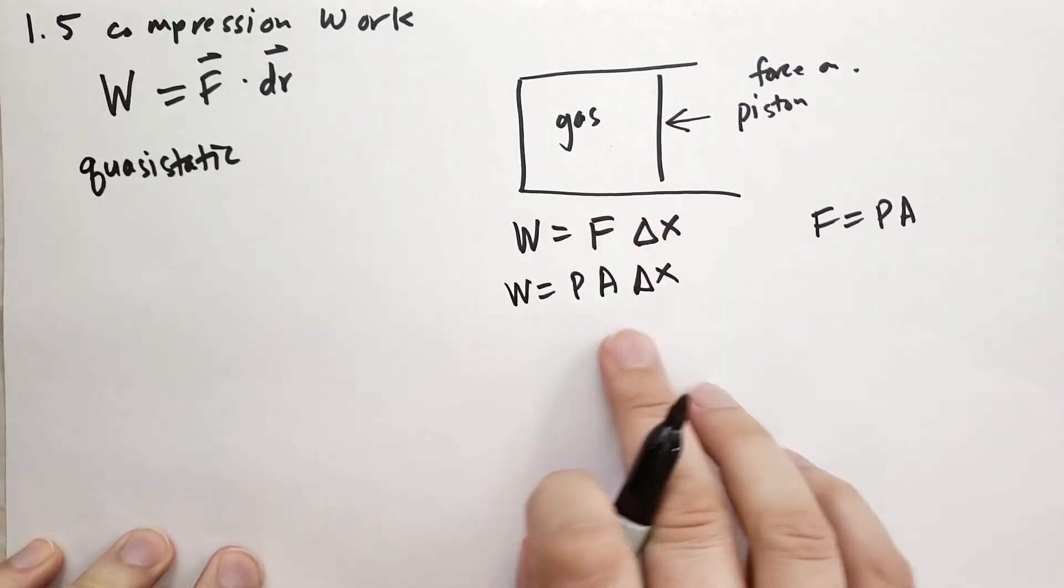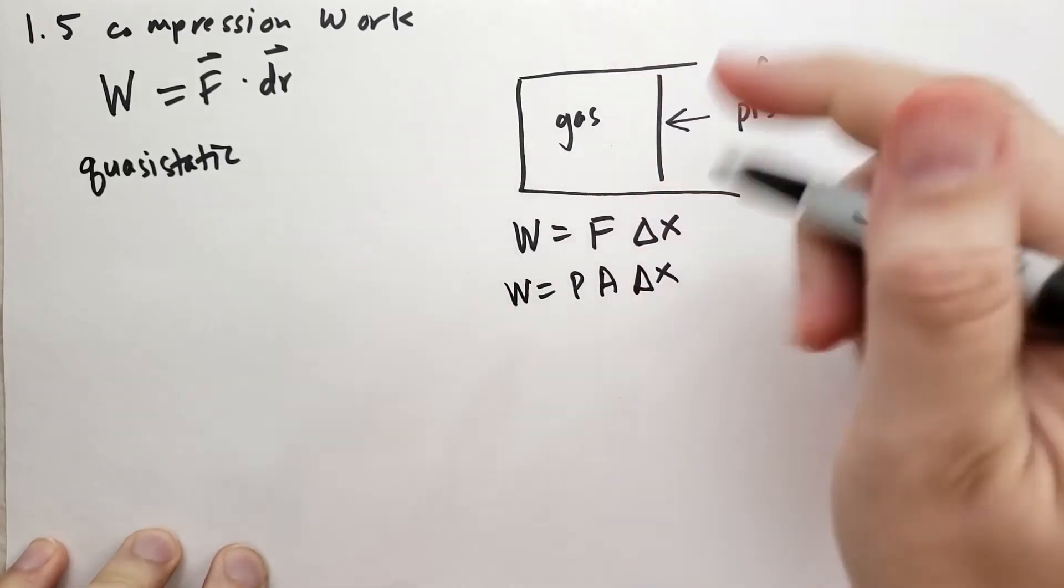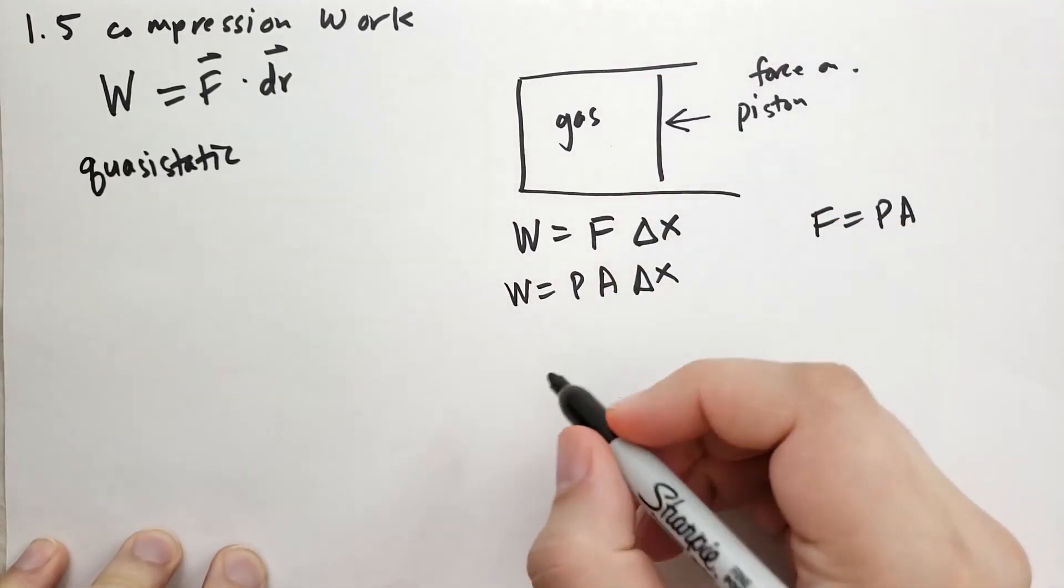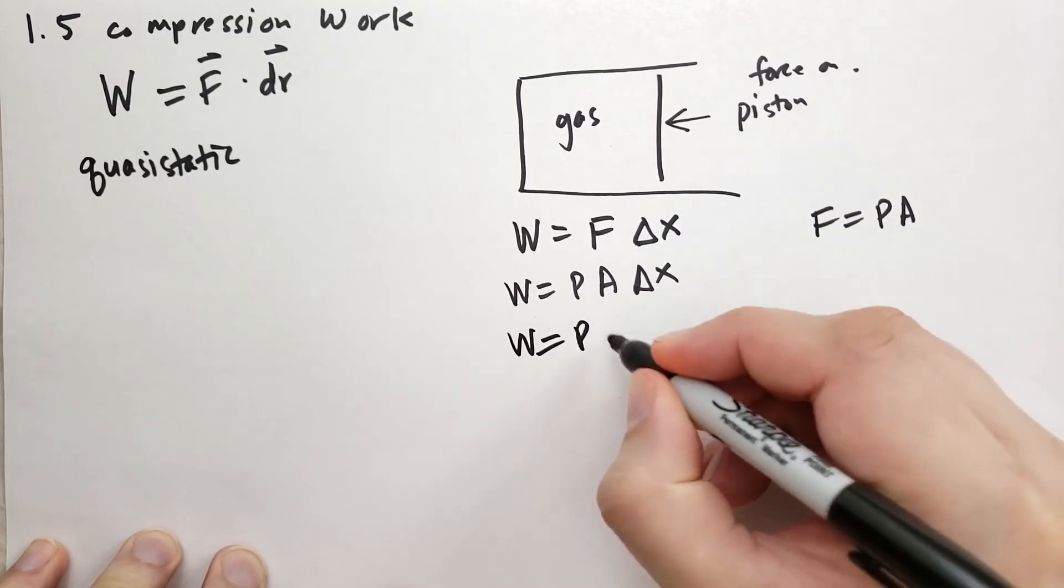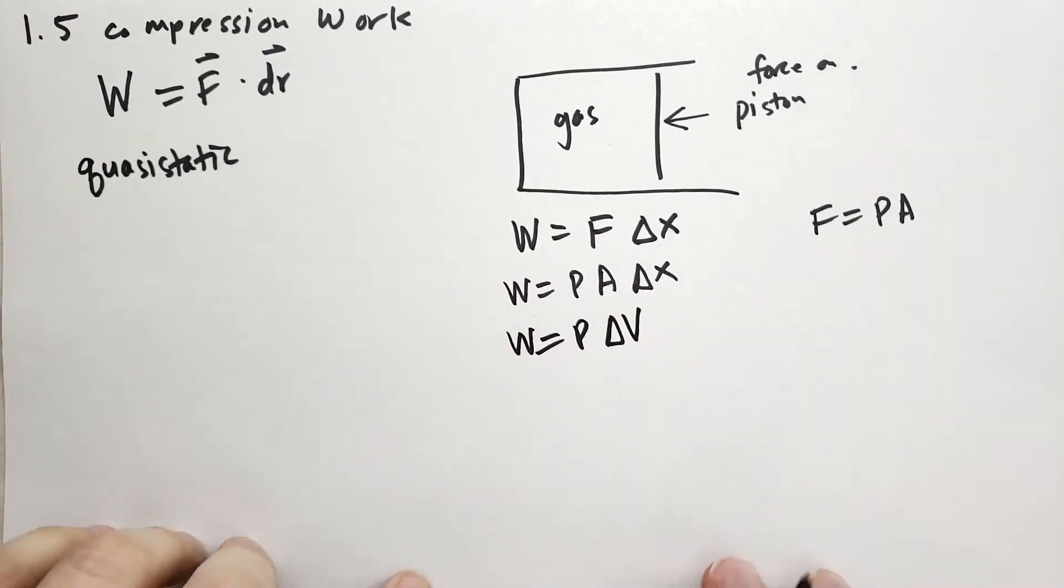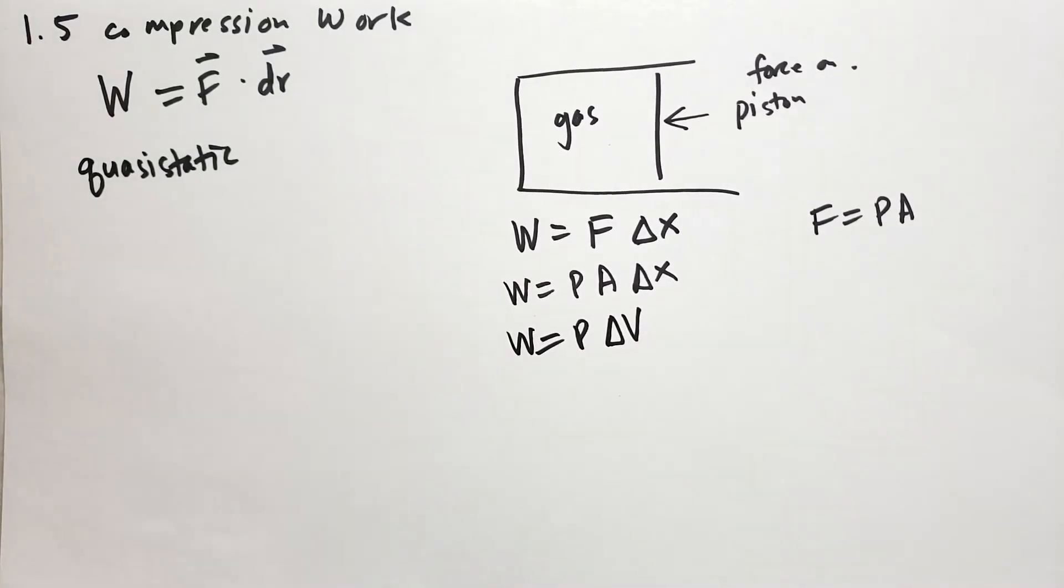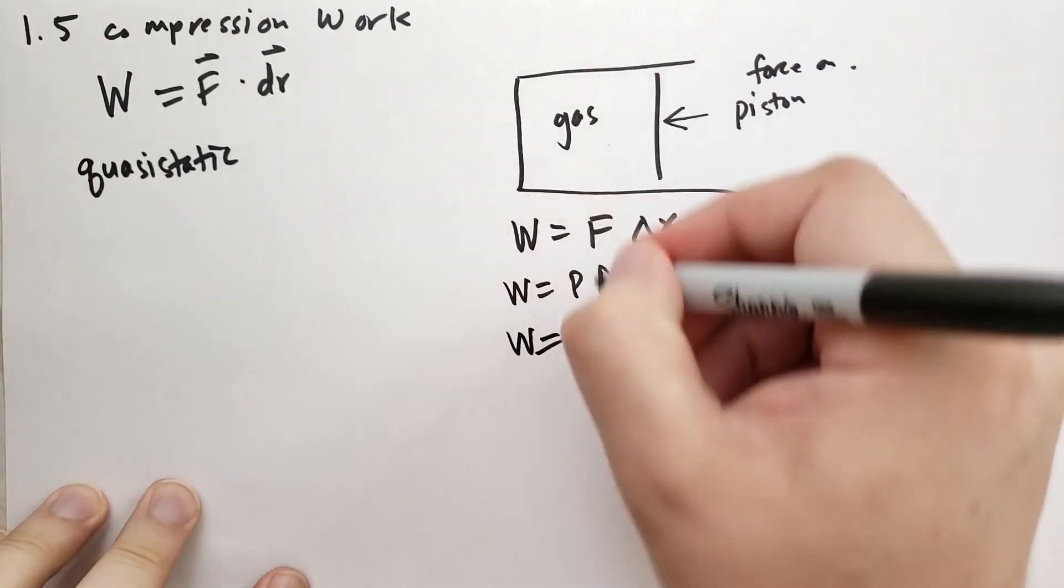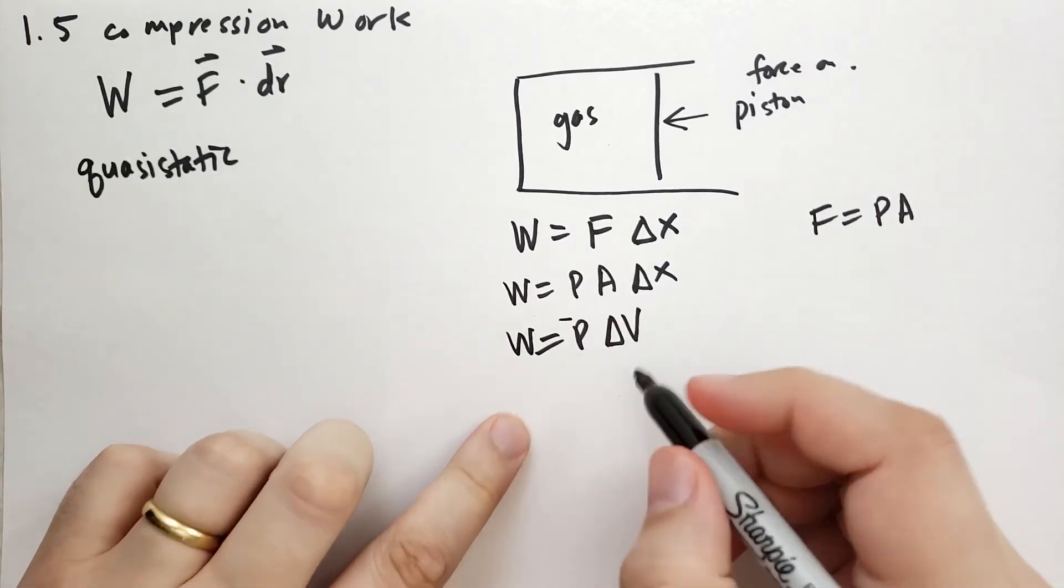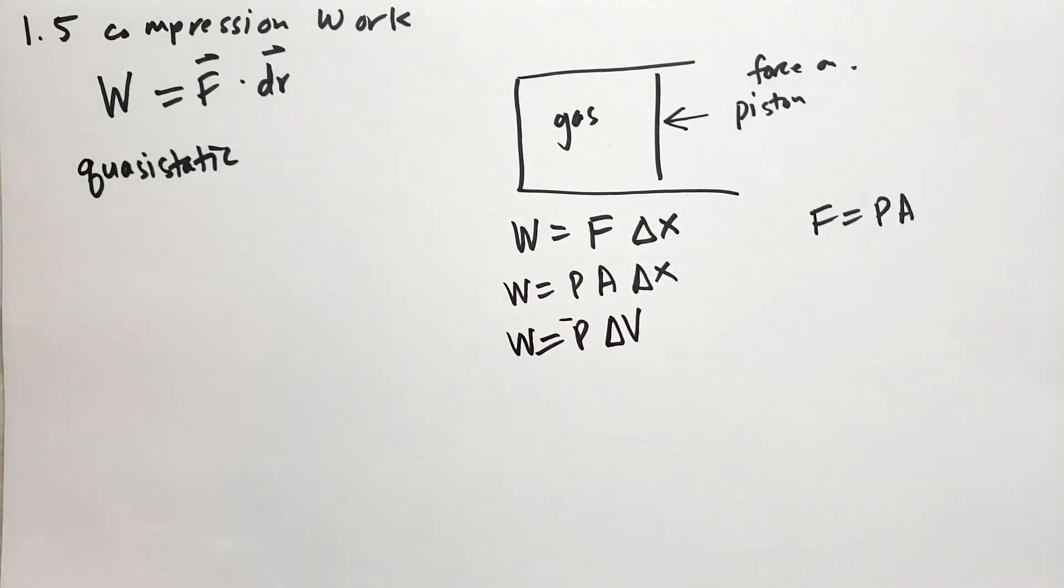If you look at this formula here, you'll notice that the area of the piston times the change in the position, that's just the change in volume. So if we rewrite this as work is the pressure times the change of volume of the gas. And since the volume is decreasing, the gas's volume is decreasing, we're going to change that sign to a minus sign. So work is minus the pressure times the change in the volume.